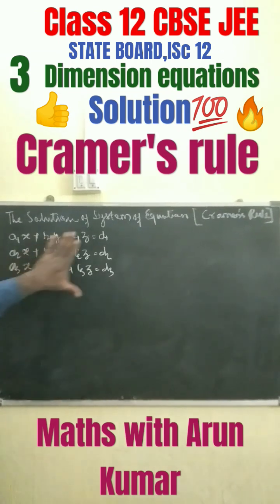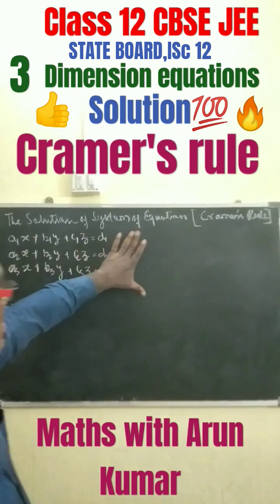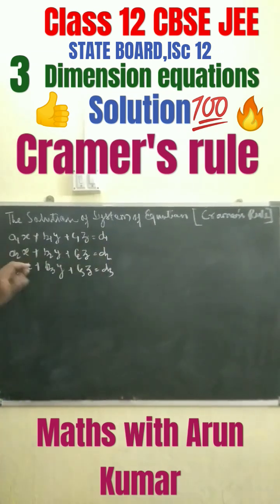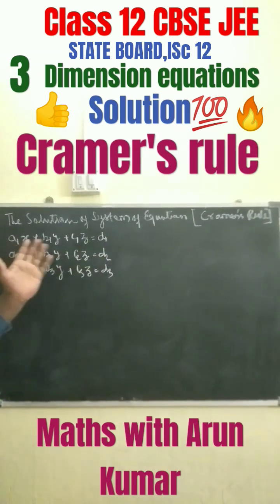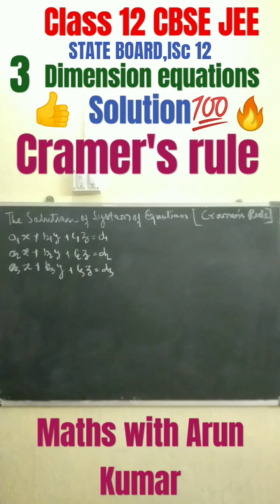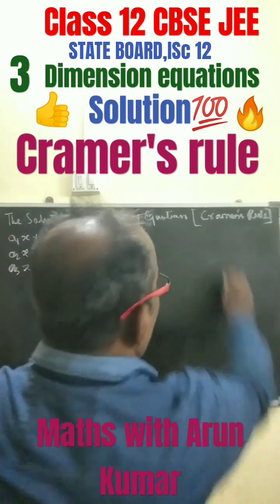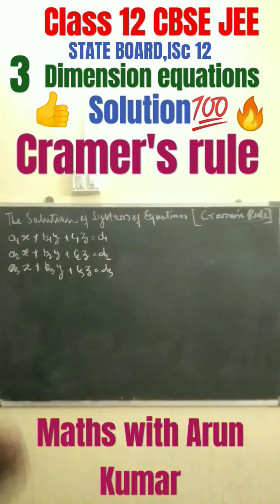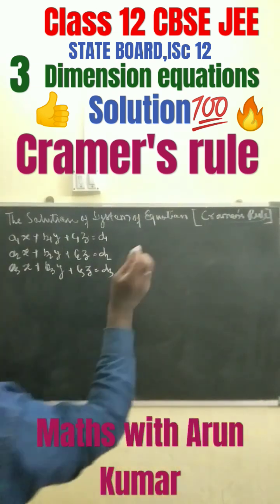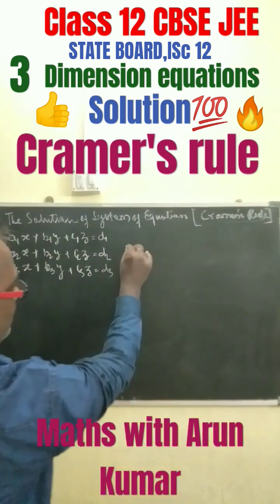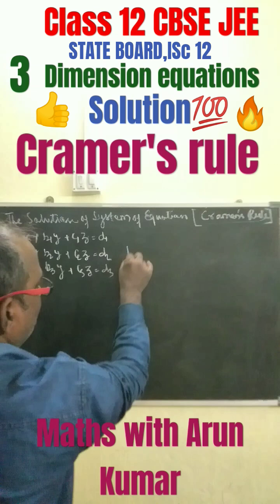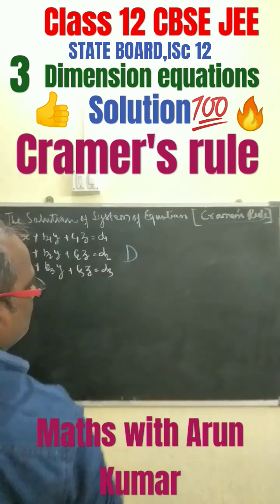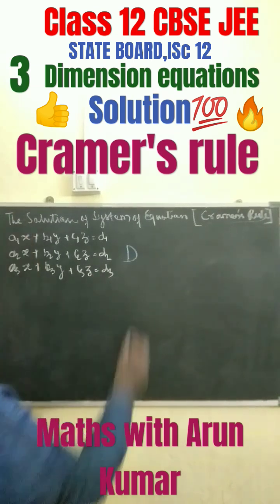This is a system of linear equations where we have to find out the values of x, y, and z by using Cramer's rule. With the help of Cramer's rule, at first what we have to find out is the determinant D.